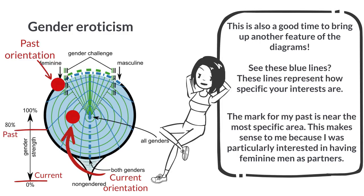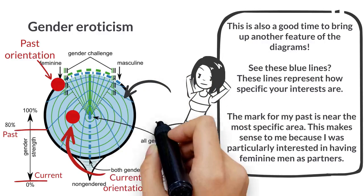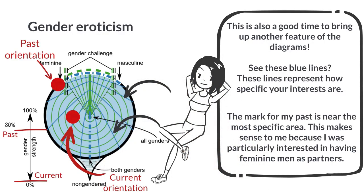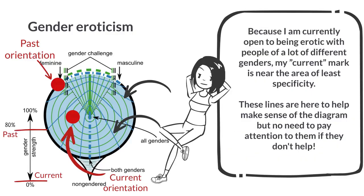This is also a good time to bring up another feature of the diagrams. See these blue lines? These lines represent how specific your interests are. The mark for my past is near the most specific area — I was particularly interested in having feminine men as partners. Because I'm currently open to being erotic with people of a lot of different genders, my current mark is near the area of least specificity. These lines are here to help make sense of the diagram, but no need to pay attention to them if they don't help.